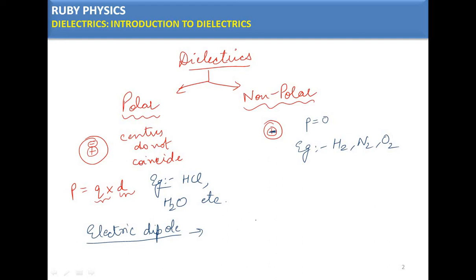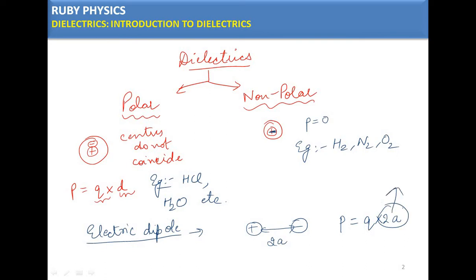A dipole is a pair of equal and opposite charges — a positive charge and a negative charge — separated by some distance, which we represent as 2a. The dipole moment is charge multiplied by distance, where the distance here is 2a. You may also see it written as d or 2d in different texts.